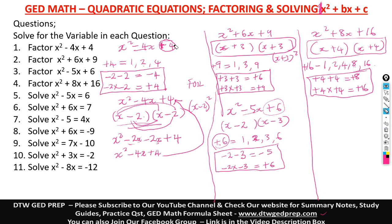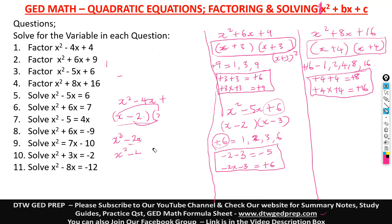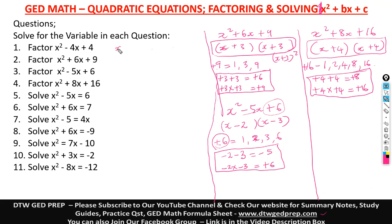Now let's go to solving — that's question 5. Still the same factoring method, but there's an extra step. This says x squared minus 5x equals 6. Since we have an equals sign, we take 6 to the other side and make this equal to 0. Taking 6 to the other side, the sign changes to negative, giving us x squared minus 5x minus 6 equals 0.